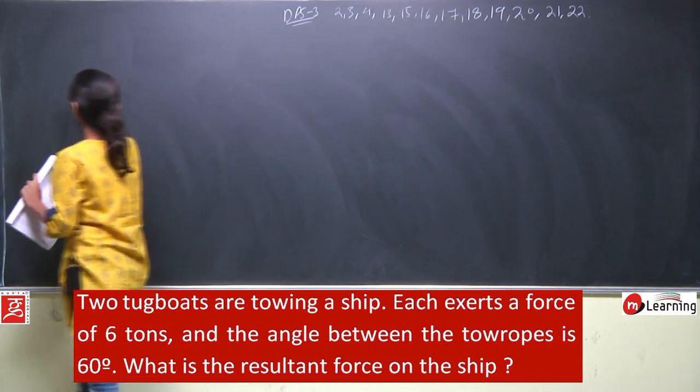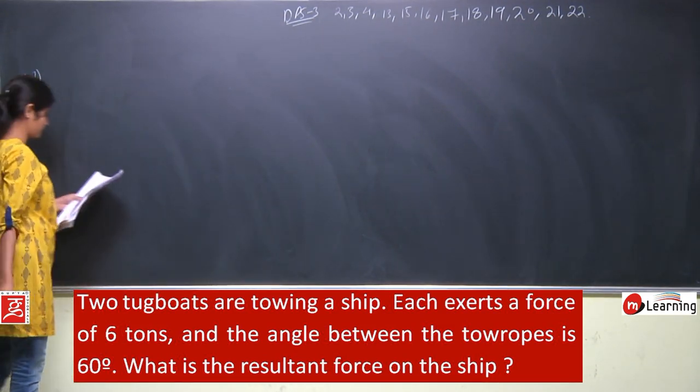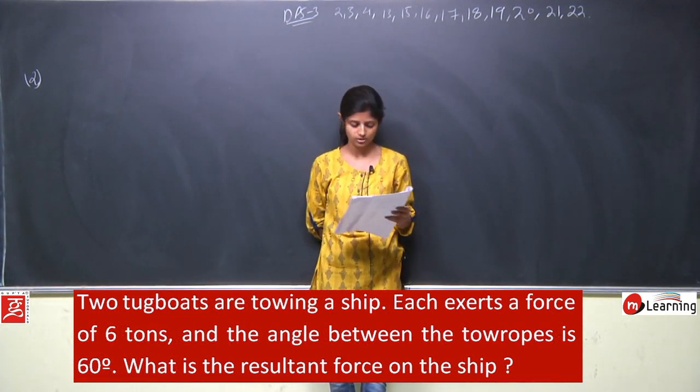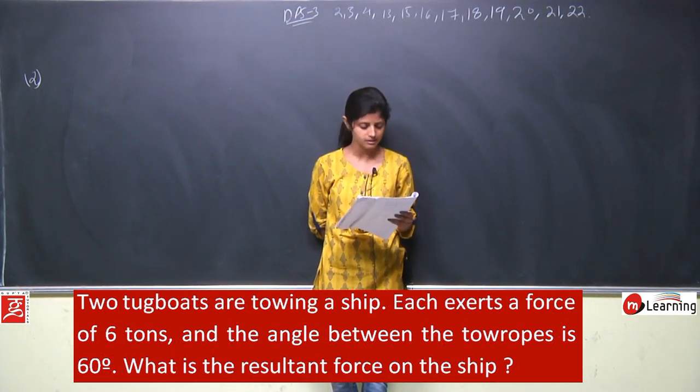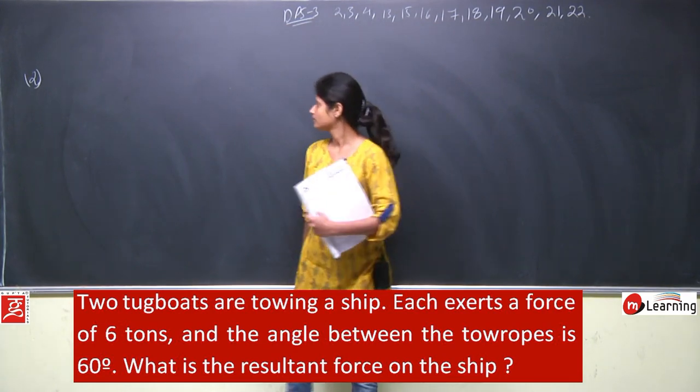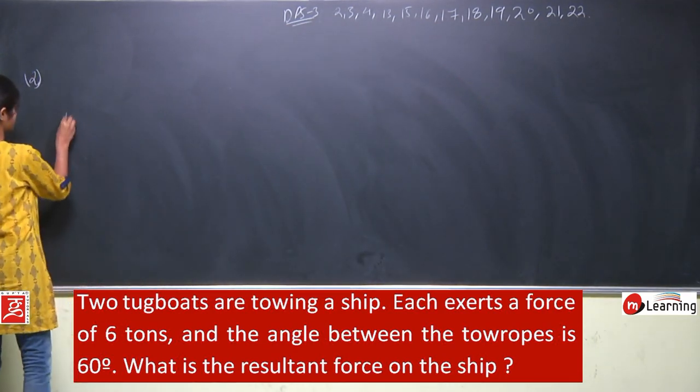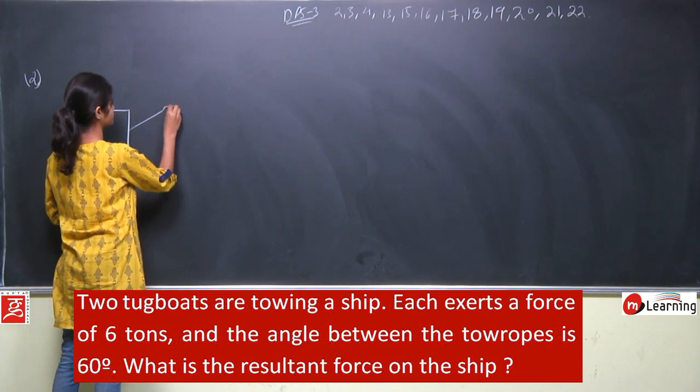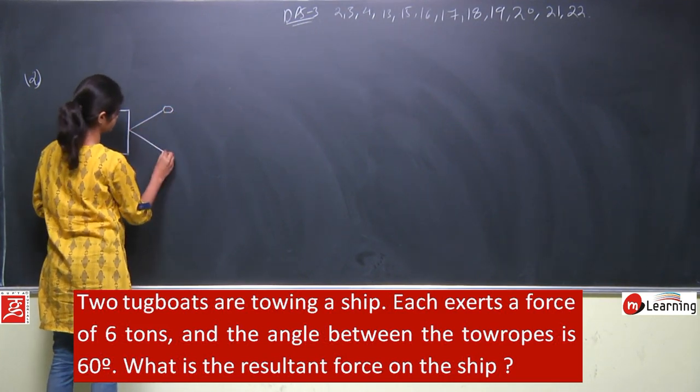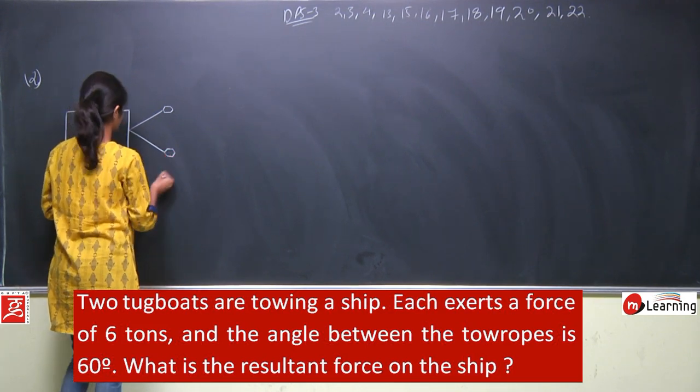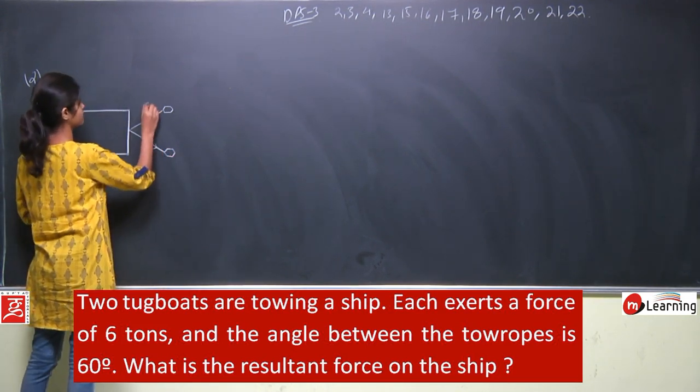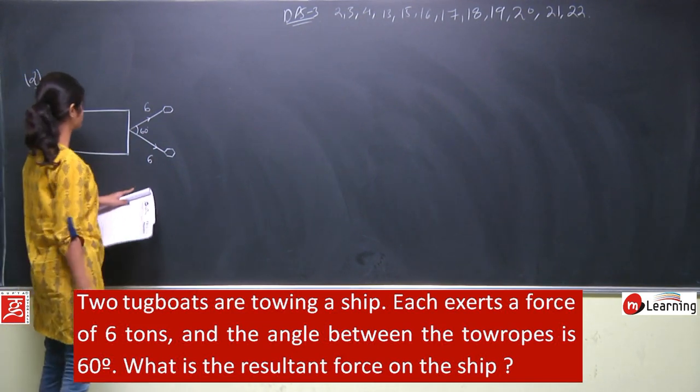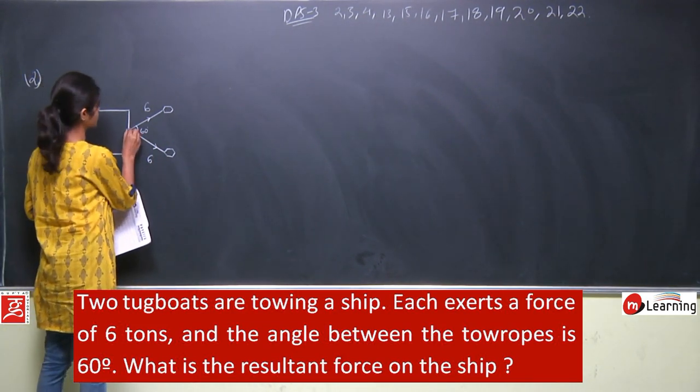So let us start with the second question. Two tugboats are towing a ship, each exerts a force of 6 tons and the angle between the tow ropes is 60 degrees. What is the resultant force on the ship? So this ship and two small boats are pulling it.